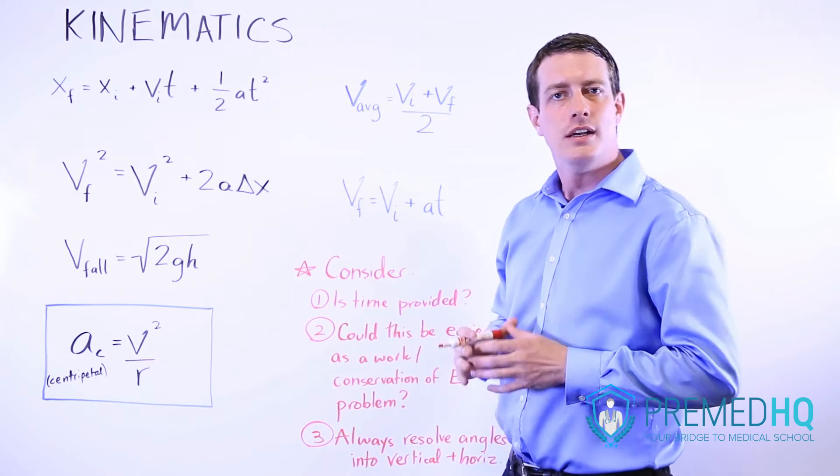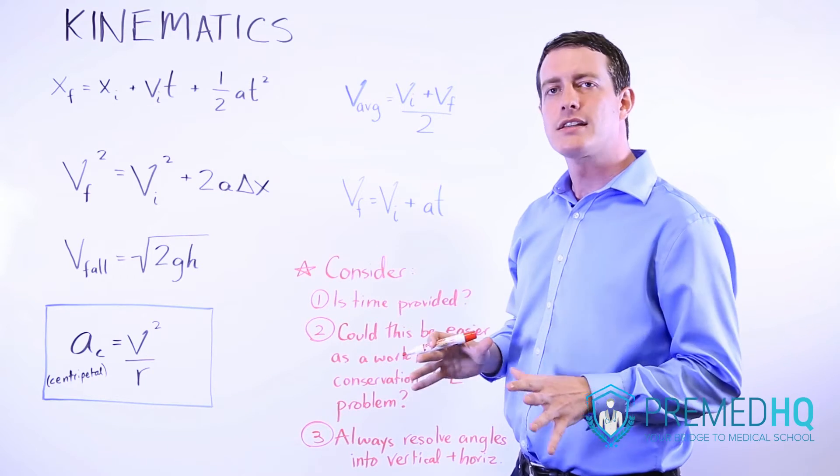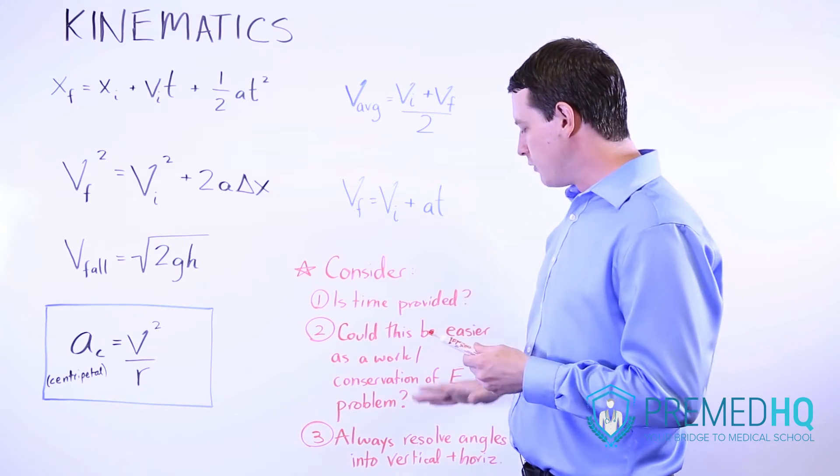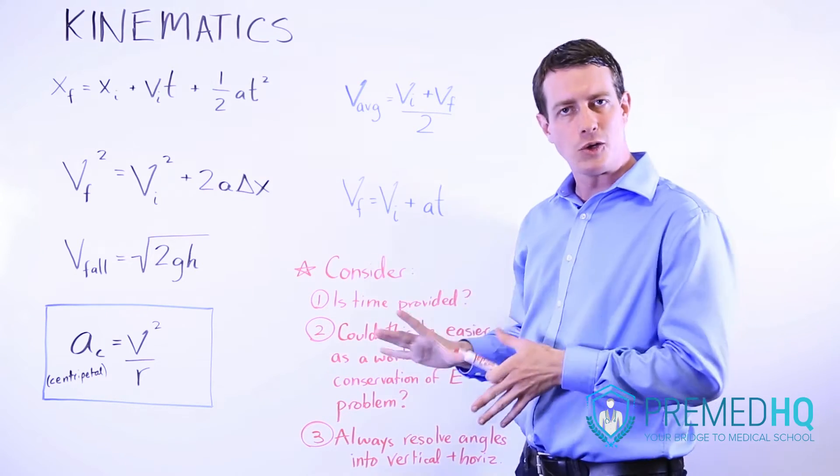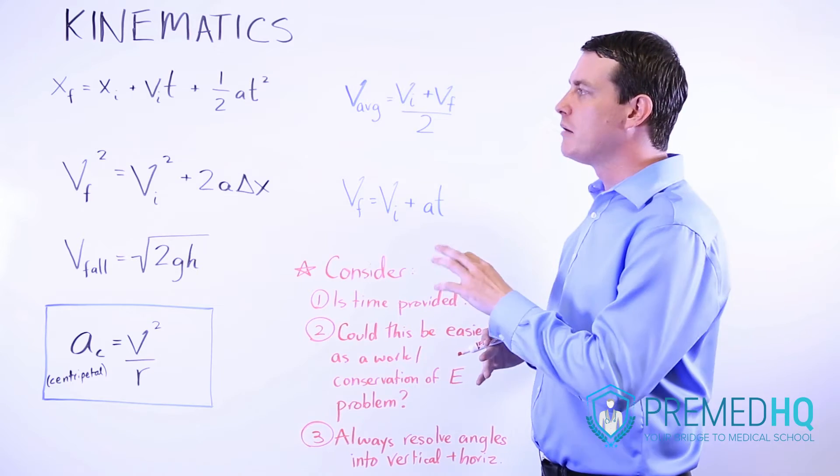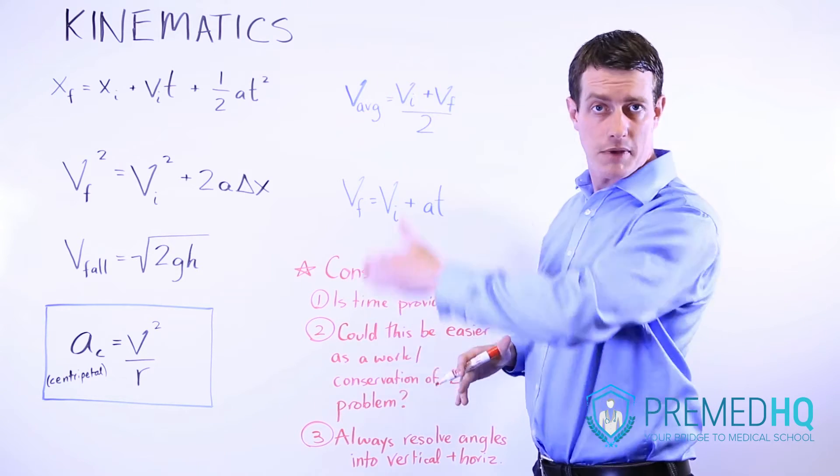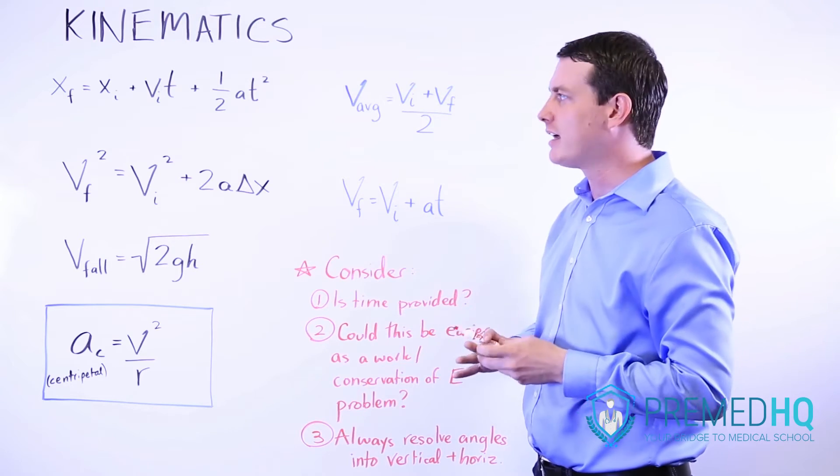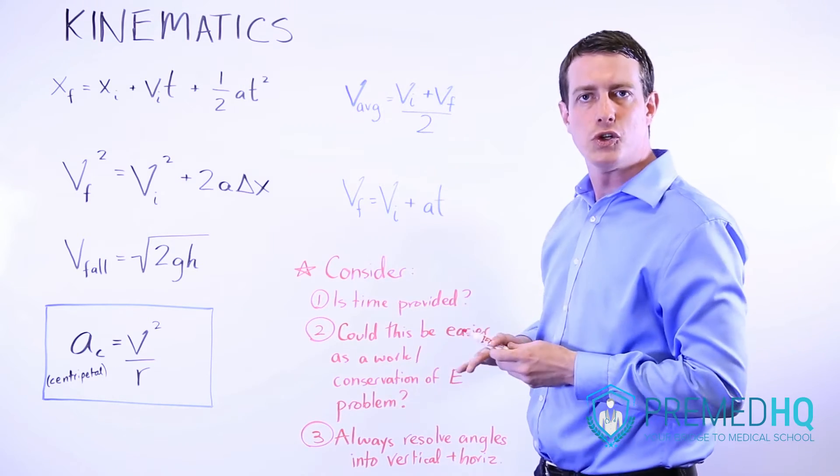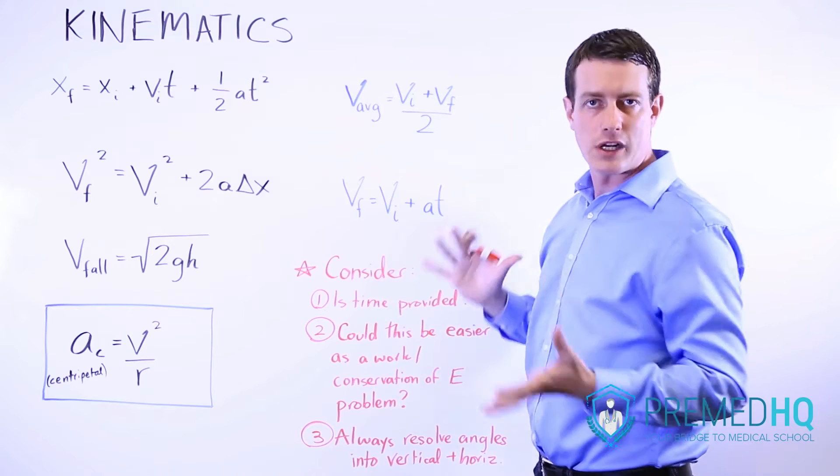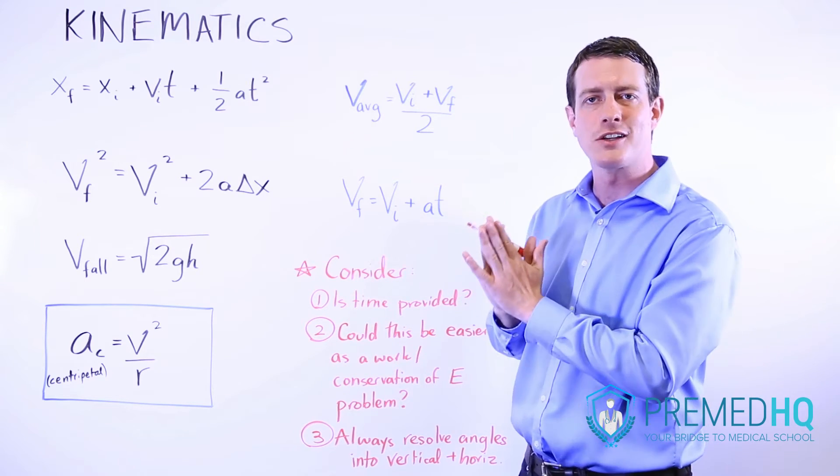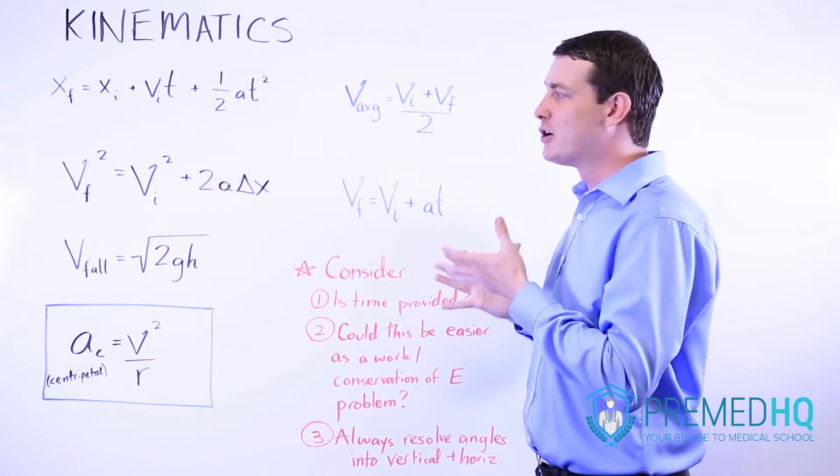Kinematics, like most other things in physics, involves resolving angles into vertical and horizontal pieces. You'll be able to solve for the vertical kinematics component as well as the horizontal kinematics. These formulas will hold true when you're solving for vertical or horizontal. Just make sure to orient yourself well and resolve those angles into their vertical and horizontal pieces.